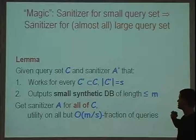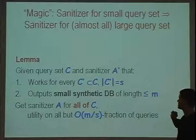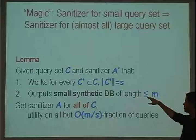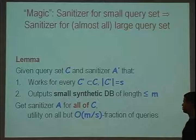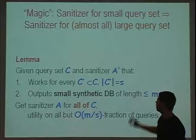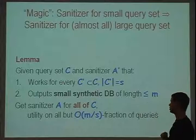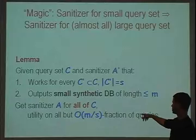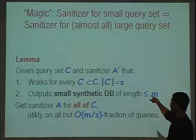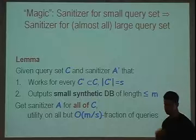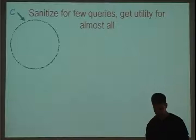Of course I need to tell you where we get this small sanitizer A' — I said by recursion. We keep the recursion going, but in the end we hit the bottom of the recursion with some small set of queries. I also haven't told you why the magic happens — why a synthetic database for a small set of queries generalizes well. Let me focus on just trying to explain why this magic happens.